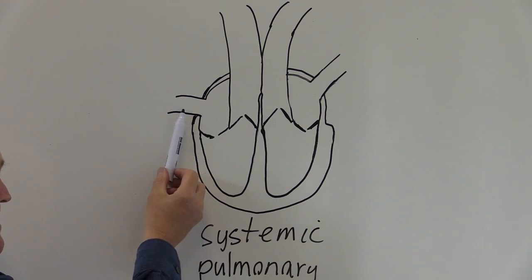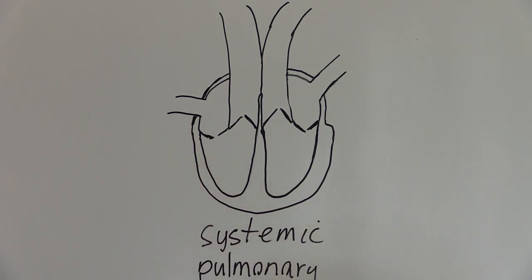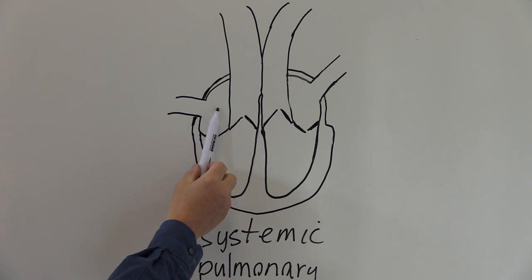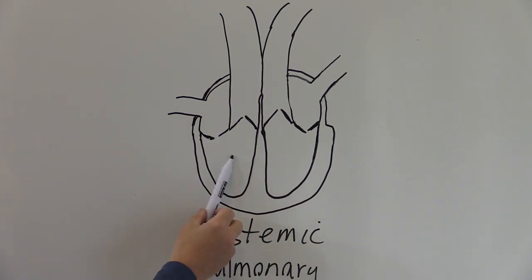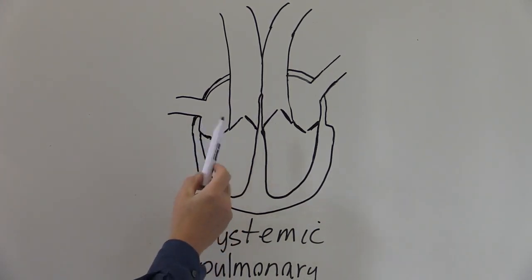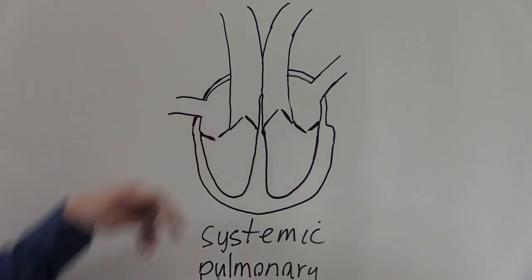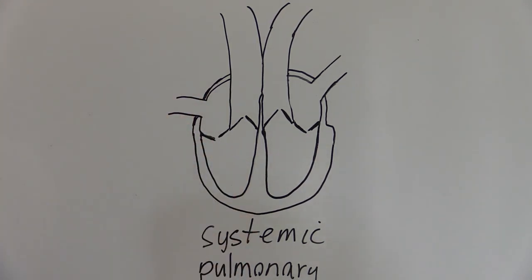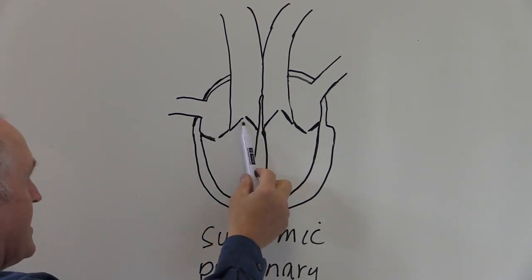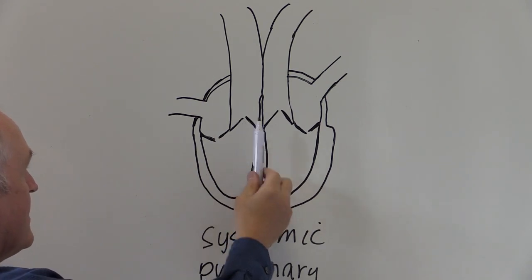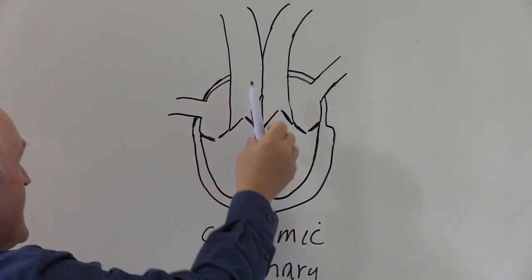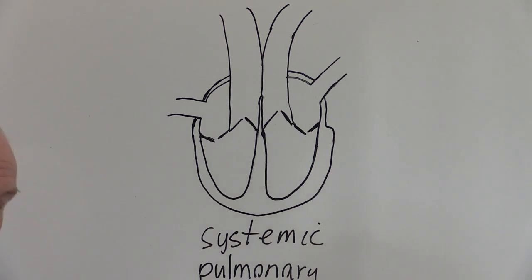This would represent the inferior and superior vena cava, the right atrium and the right ventricle. That would make this atrioventricular valve here pointing down the way — that would make that the tricuspid valve.